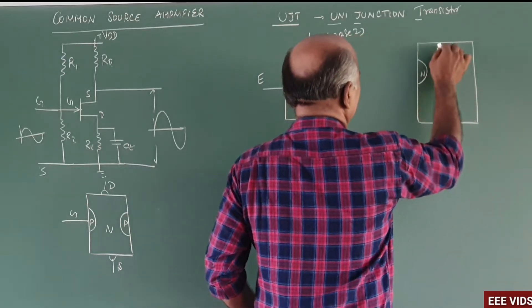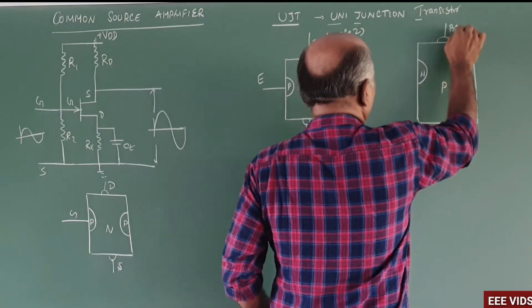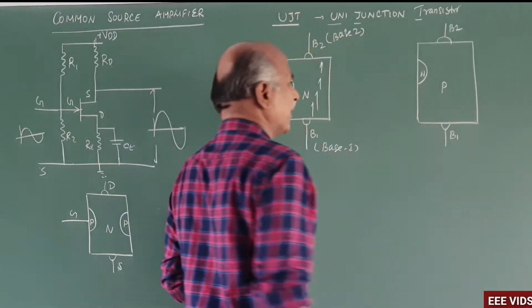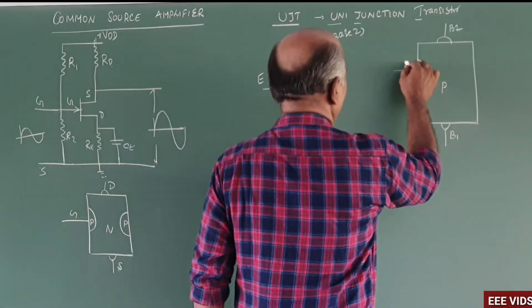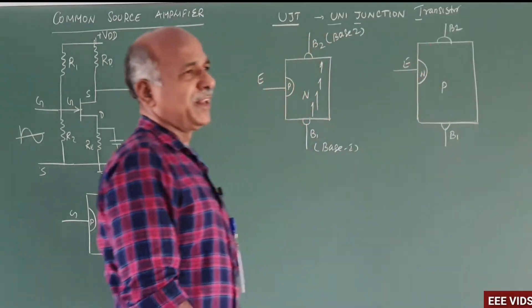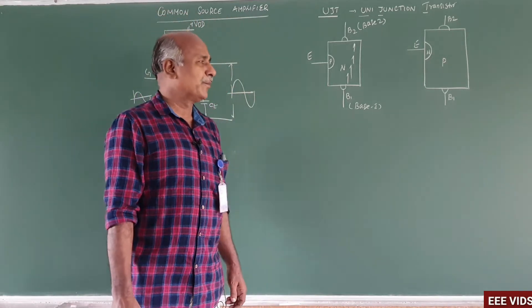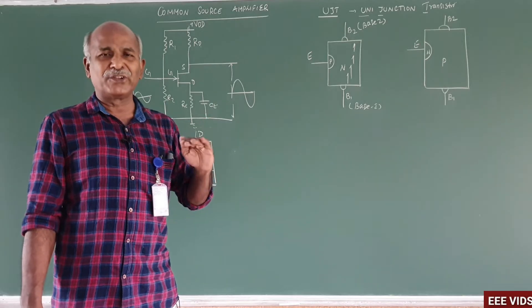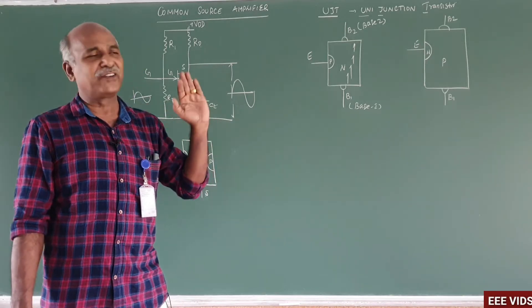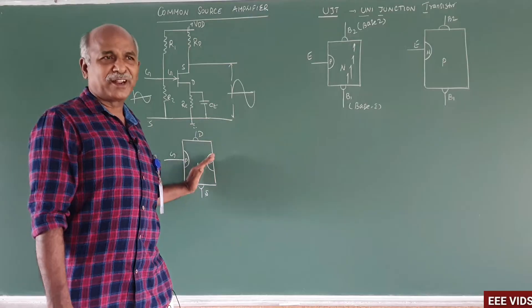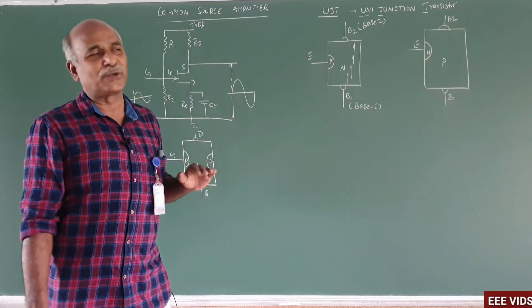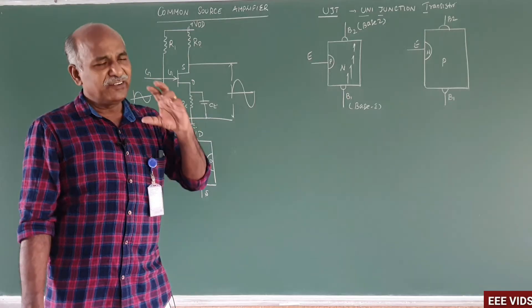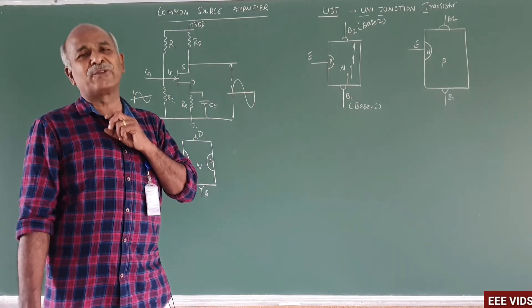The third terminal is the emitter. So after base-1, base-2, and emitter — three terminals are found. One bar-type material, one junction created. In the FET there are two junctions, whereas in the UJT only one junction is created. That is the main concept in construction.